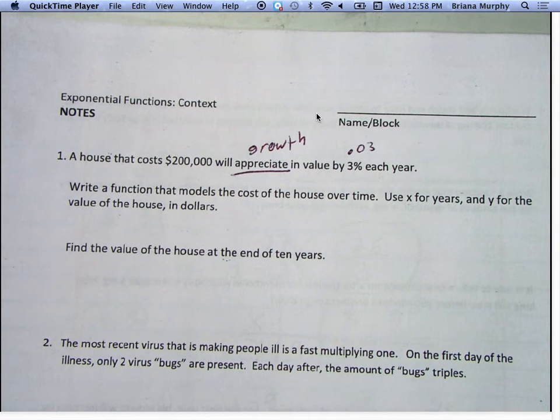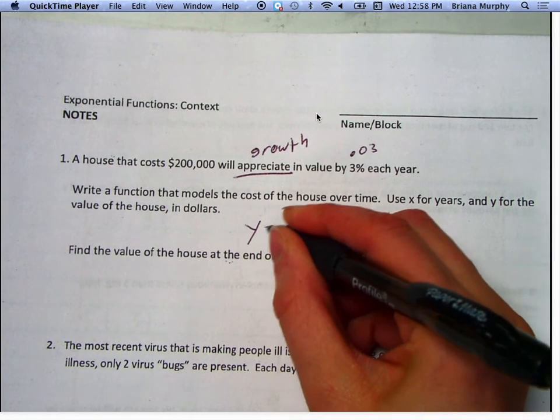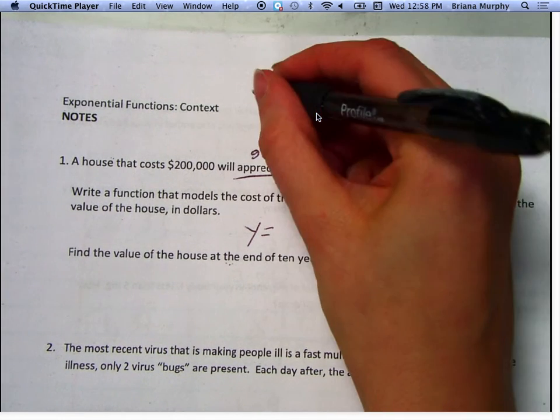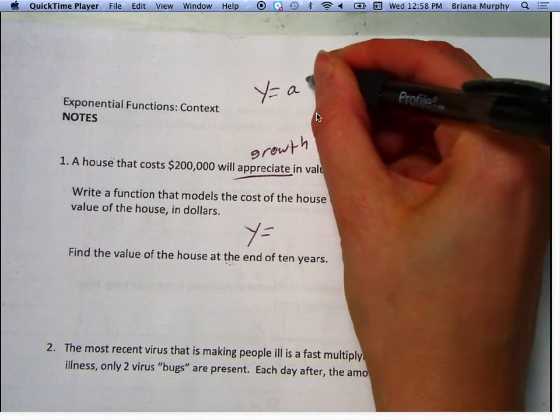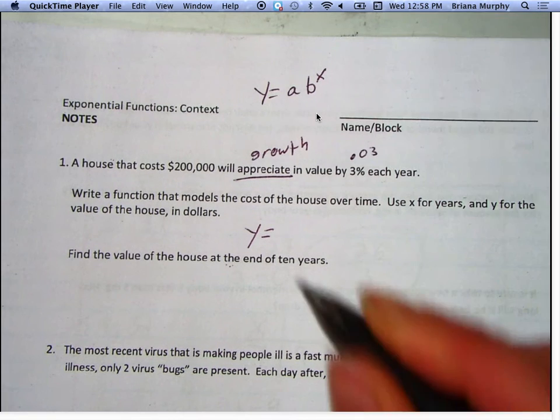We're going to write a function that models the cost of the home over time. Use x for years and y for the value of the house in dollars. So we're going to write y equals the house. What was the initial? So if we're still looking at that function y equals a, b to the x. What's a going to be?